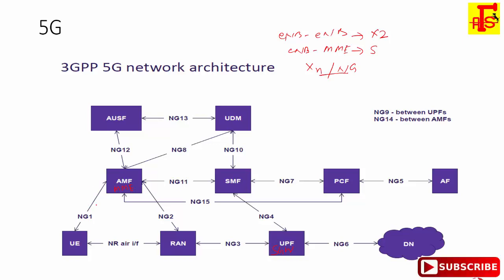The UE is also connected via interface to the AMF, and the RAN — which in LTE is eNodeB — in 5G is called gNodeB.